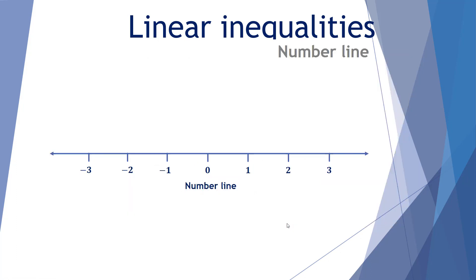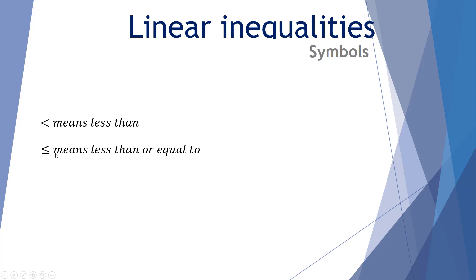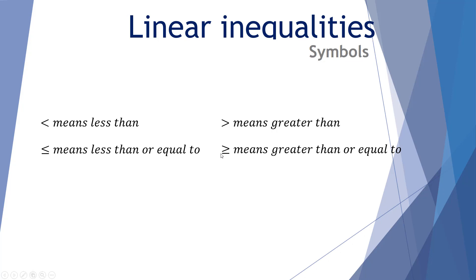Let's consider a number line — a straight line that represents all possible values of x, with zero in the center, going positive to the right and negative to the left. Some basic linear inequality symbols: a little arrow to the left means less than; arrow to the left with a line underneath means less than or equal to; arrow to the right means greater than; and arrow to the right with a line underneath means greater than or equal to.